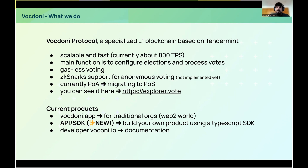Currently we support about 8,000 transactions per second, which translates to more than 1 million votes per day — enough for 99.9% of organizations' needs. The main function of this protocol is to create, configure, and manage elections and process votes. We support ZK-SNARKs anonymous voting, but it's still not implemented in the SDK — we'll do it in the near future.